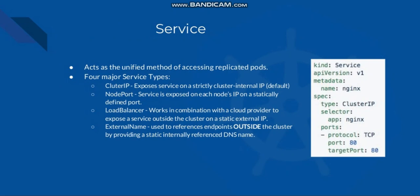Service acts as a unified method of accessing replicated pods. There are four major service types: ClusterIP, NodePort, LoadBalancer, and ExternalName. ClusterIP exposes the service on a strictly cluster-internal IP — that is the default. NodePort exposes the service on each node's IP on a statically defined port. LoadBalancer works in combination with a cloud provider to expose the service outside the cluster on a static external IP. ExternalName is used to reference endpoints outside the cluster by providing a static internal reference DNS name.